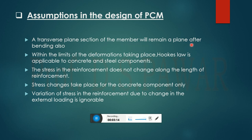The first assumption is: the transverse plane section of the member will remain plane after bending also. The second assumption is: within the limits of deformation, Hooke's law is applicable for the concrete and steel components. This means up to the assigned deformation limits, Hooke's law — which states that stress is directly proportional to strain — is applicable to both concrete and steel.